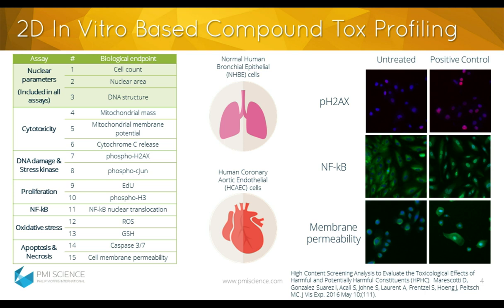Here at Philip Morris International, we routinely use 2D submerged cell culture systems, together with a series of image-based endpoints which, individually or multiplexed, are used to characterize the toxicity profile of various compounds and products of interest. The table on the left shows a summary of endpoints included in our routine toxicity profiling. Markers of oxidative stress, mitochondrial health, cell viability, and cell cycle-related markers are most commonly investigated, relying on lung and cardiovascular in vitro models such as normal human bronchial epithelial cells and human coronary aortic endothelial cells. The panel of images on the right shows examples of some of these endpoints, including phosphorylation of H2AX, translocation of NF-κB, and increase in cell membrane permeability.